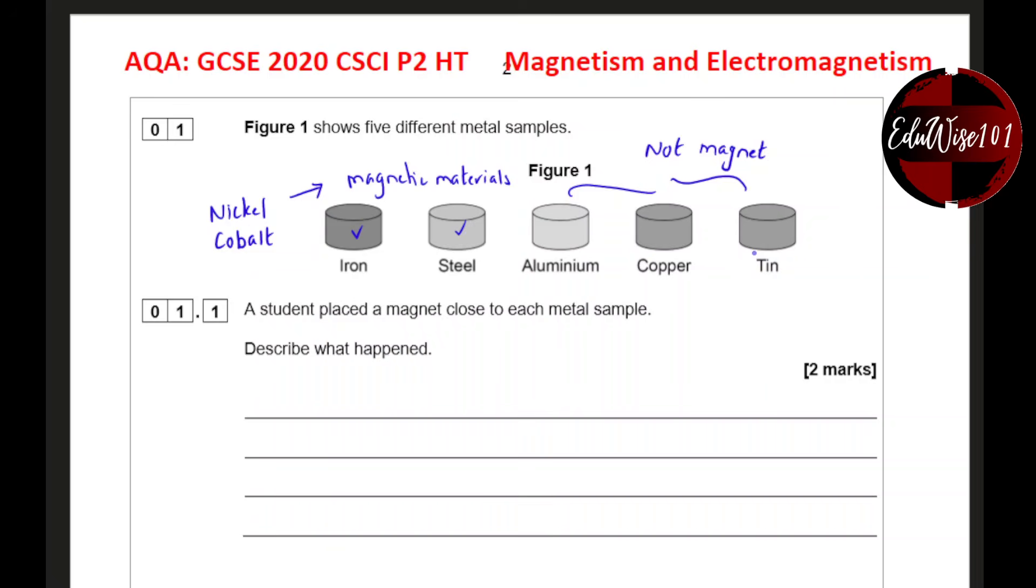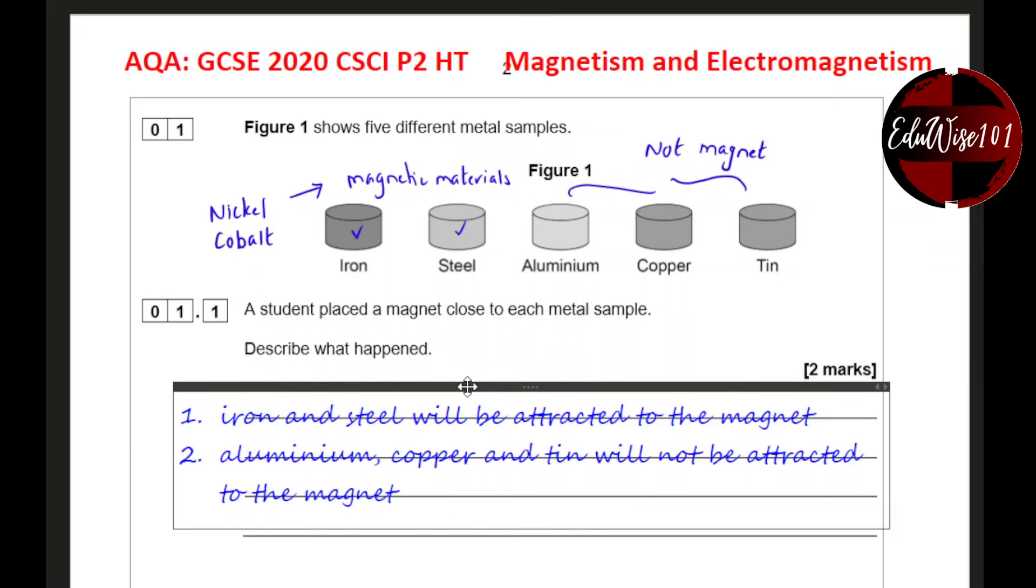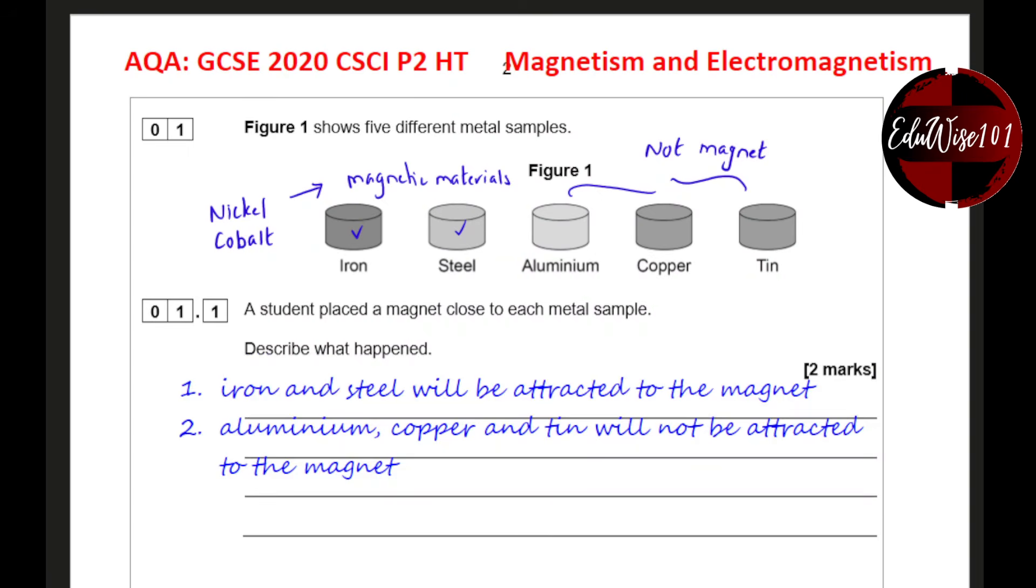So how do we answer this question? Iron and steel will be attracted to the magnet, while aluminium, copper and tin will not be attracted to the magnet.